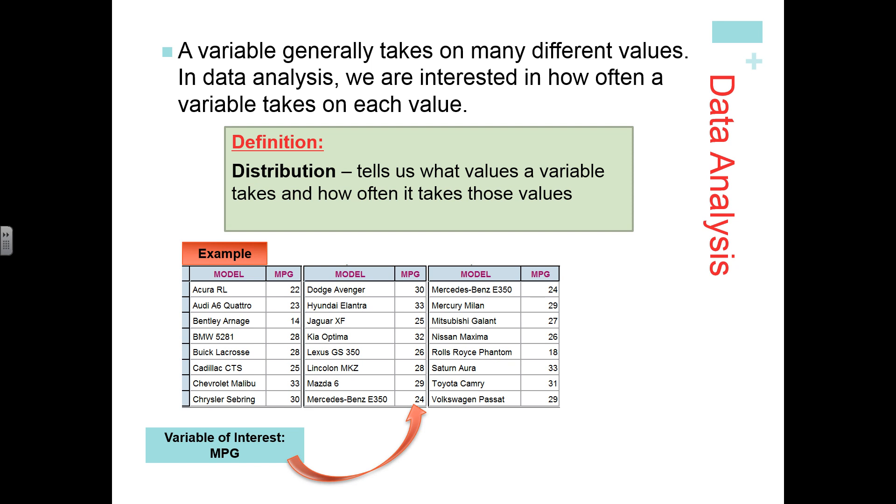But if we look at the distribution of the variable mileage per gallon, we can get a better idea. Here we have a dot plot of the distribution. We can see some cars had very low mileage per gallon. For example, the Bentley had a mileage per gallon of 14, and some had high mileage per gallon. For instance, the BMW had a mileage per gallon of 28.